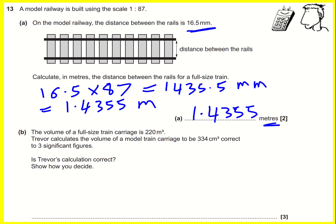The volume of a full-size carriage is 220 meters cubed. Trevor calculates the volume of the model train carriage to be 334 centimeters cubed. Is Trevor's calculation correct? Let's have a go.